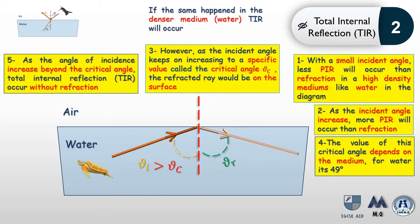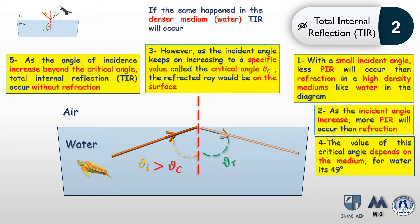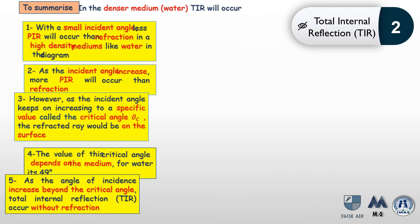The value of the critical angle depends on the type of medium. For water, it is 49 degrees, meaning if the angle of incidence is 49 degrees, the refracted ray lies on the surface between water and air. Total internal reflection occurs when the angle of incidence exceeds the critical angle — all of the incident ray is internally reflected in the water, with nothing refracted into the air. The boundary acts as a perfect mirror.